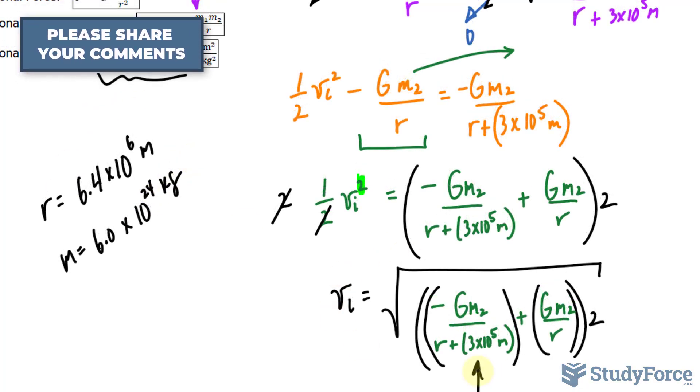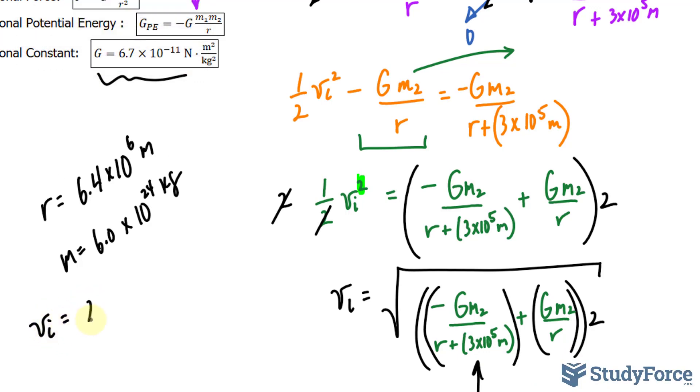If you sub these values into this formula, you should end up with an initial velocity being roughly 2.4 times 10 to the power of 3 meters per second. And there you have it. That's the initial velocity that you need to shoot an object 300 kilometers from the surface of the Earth.